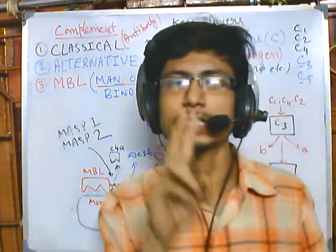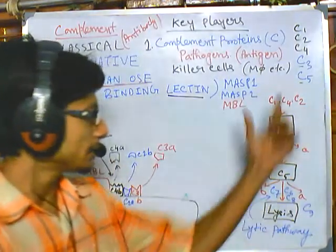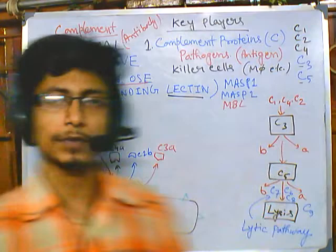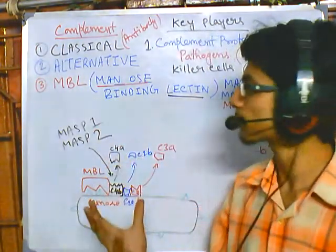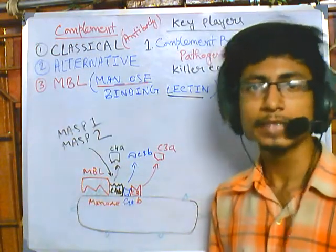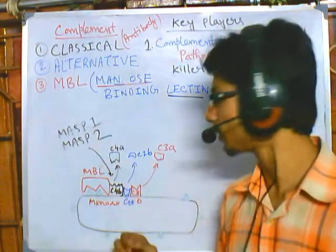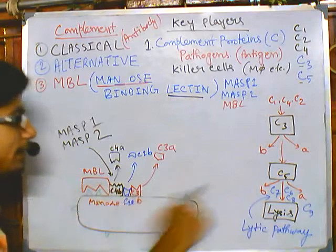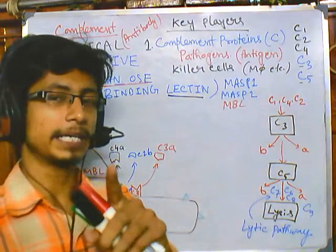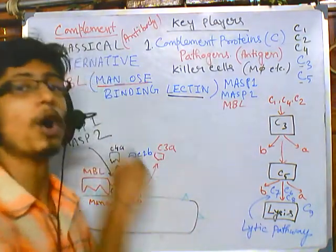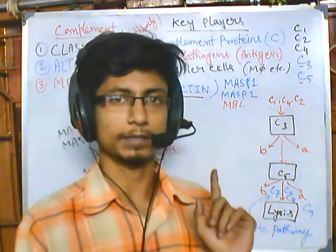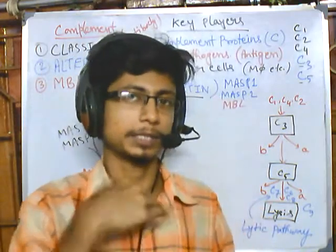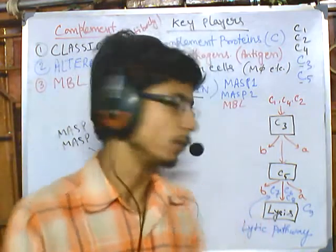We are now at the second barrier: C5 convertase. The C5 convertase complement complex is identical for the classical pathway and the MBL pathway, which is why these two pathways so closely resemble each other. This C5 convertase will cleave C5 into C5A and C5B. C5B is the larger part, but it cannot associate directly with the bacterial membrane on its own — it requires additional support.